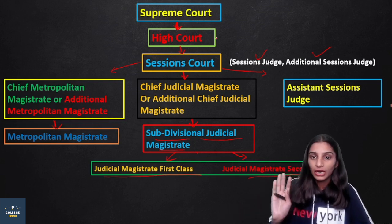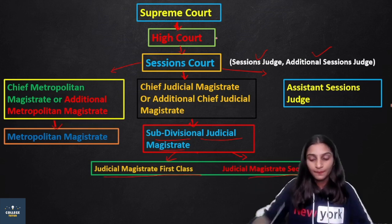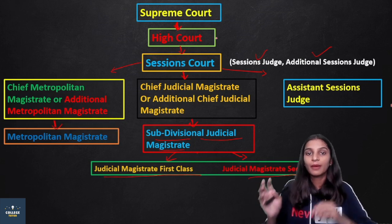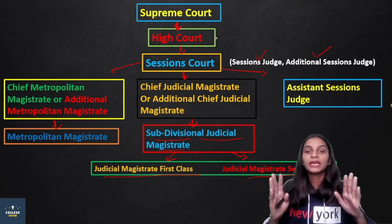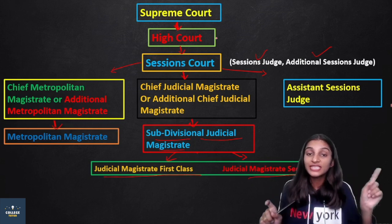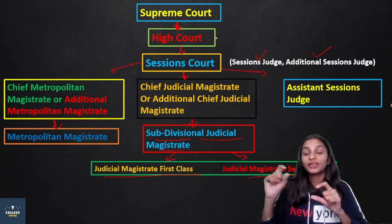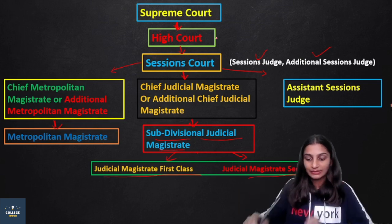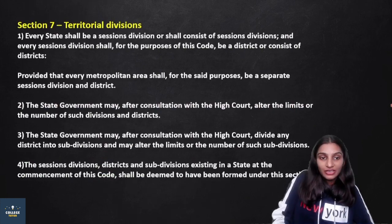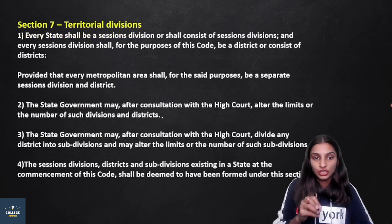So Section 6 covers the classification of Criminal Courts in India. After Section 6, we move to Section 7, which deals with Territorial Divisions.